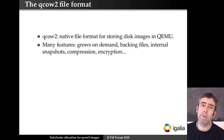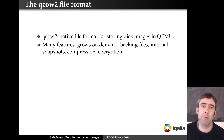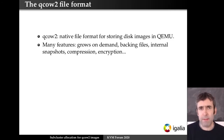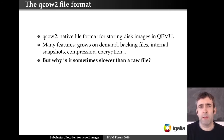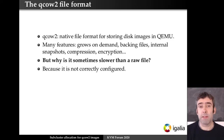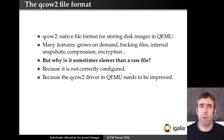As you know, QCow2 is the native file format used by QEMU and it supports many features such as encryption, compression, backing files, etc. The question I'm going to try to answer today is: why is it that sometimes it is slower than a raw file? There are many reasons — it can be because it hasn't been configured correctly, we're not using the right options for our setup, or the driver can be improved and there's still room for improvement there.